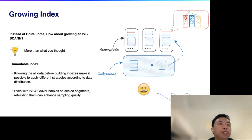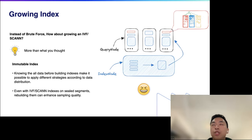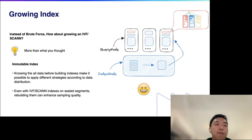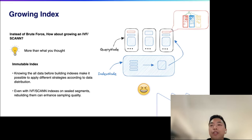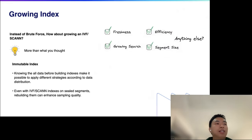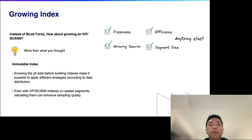This design ensures that the final index in Milvus is immutable for sealed segments. Therefore we can choose the most suitable optimization strategies based on data distribution during index building time, such as compression and pruning strategies. Even if the sealed index is IVF or ScaNN — the same type as the growing one — because the growing segment only uses initial vectors as samples, the quality of the index gets affected, so re-indexing the immutable segment is still very necessary. We've now solved issues of both data freshness and efficiency, balanced segment size, and accelerated growing segment queries.